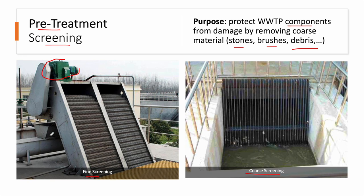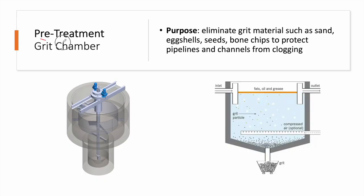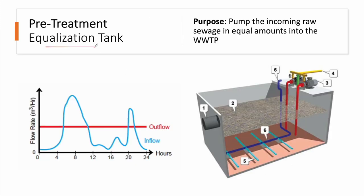For more information about screening you can go through the already posted screening lectures. A second pre-treatment process is the grit chamber. In this case we eliminate smaller grit material like sand, eggshells, seeds, and bone chips. The main purpose is still to protect pipelines and channels from clogging. We have many grit chamber technologies, including the vortex grit chamber or aerated chambers, to remove these grit particles.